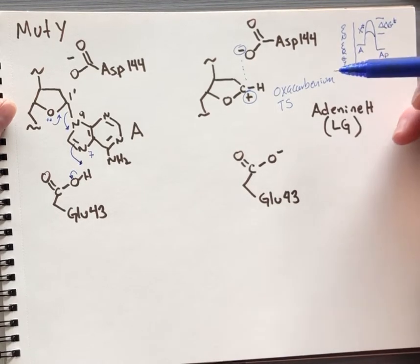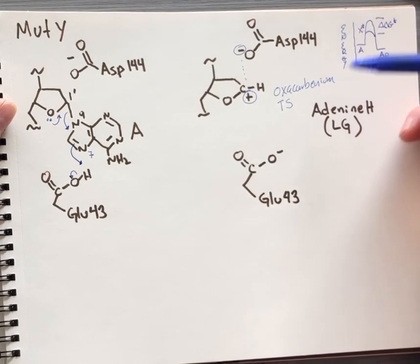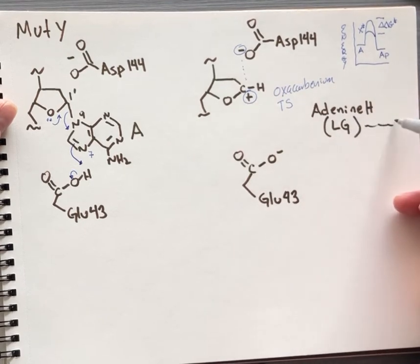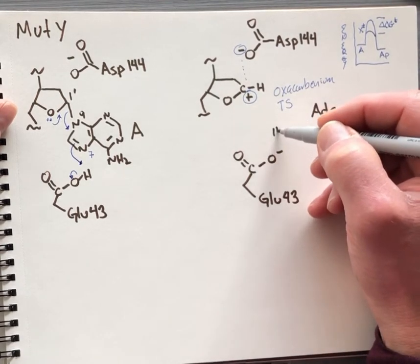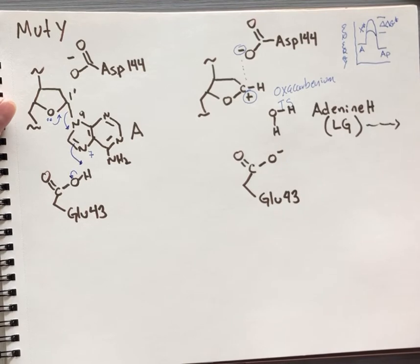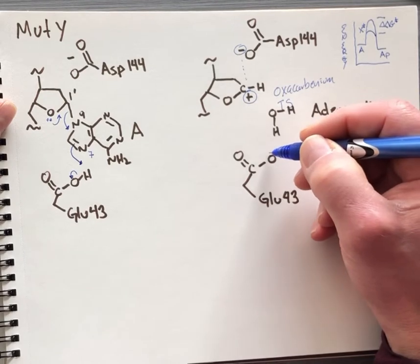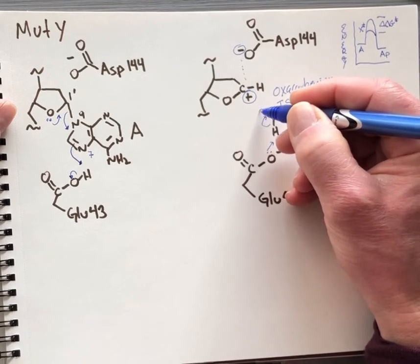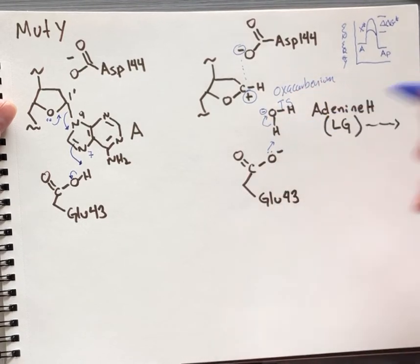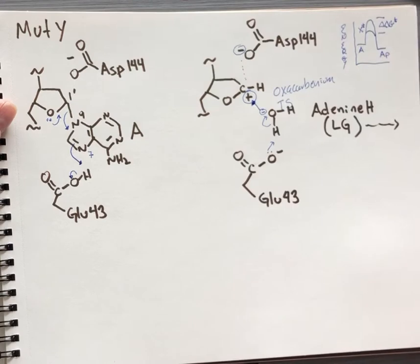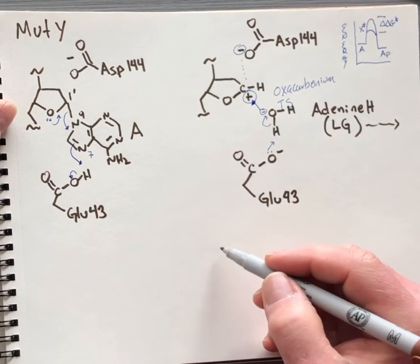In the next part of the reaction, adenine has to leave the active site and we bring in a water molecule. Water is a pretty good nucleophile, but it is made more potent by the close proximity of this catalytic base. We have an easy time generating the hydroxide nucleophile, and that will be attacking at this electrophilic center to finish the reaction. I'll draw that out here at the bottom.